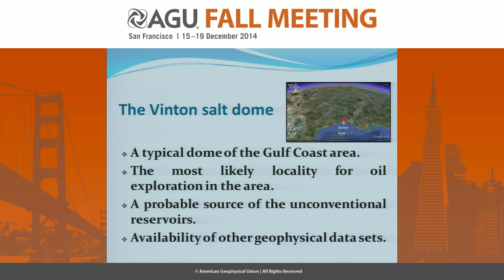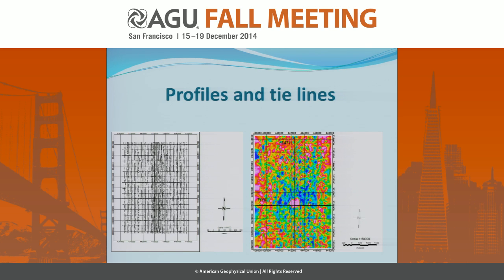Another important point was the availability of other geophysical datasets so we could compare our results with previous studies in the area. The data that we got from Belgium Space consisted of 53 profiles, 250 meters apart from each other, with a center area filled with 125-meter profiles, and then we had 17 tie lines in the area. We applied the Kalman filter on each profile separately, but we tried to investigate the behavior of the filter on a line and a tie line that goes through the salt dome anomaly.